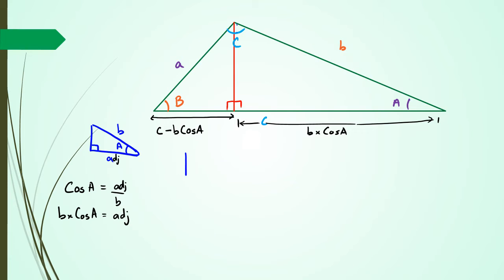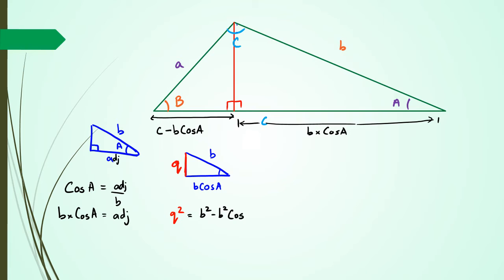Going back to the triangle on the right-hand side, I've got my hypotenuse which is B, and my side is B cos A. So I need to figure out what the missing side is — that little red line. I'm going to call it Q. So I can say: Q squared equals B squared minus B squared cos squared A.